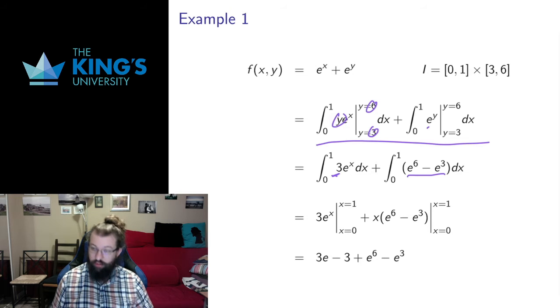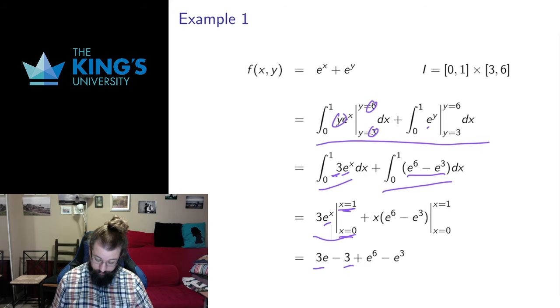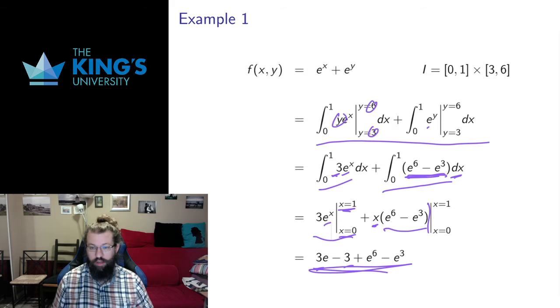That's finished the inside step of each of these, but I still have the outside integral to do in x. Here the antiderivative of e to the x is just e to the x. I evaluate it from x equals 0 to x equals 1, so e to the 1 minus e to the 0. Here this is constant, so the antiderivative is just x. I evaluate x from 1 to 0, so I just get e to the 6 minus e to the 3. This number is going to be the volume under the graph of this function on this interval.